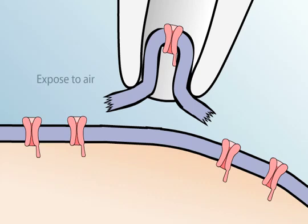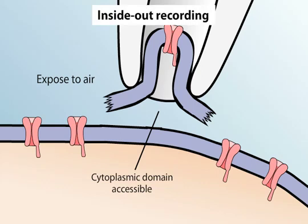By exposing the tip of the pipette to air, the vesicle opens to yield a small patch of membrane with its former intracellular surface exposed. This arrangement, called the inside-out patch recording configuration, allows the measurement of single-channel currents with the added benefit of making it possible to change the medium to which the intracellular surface of the membrane is exposed.